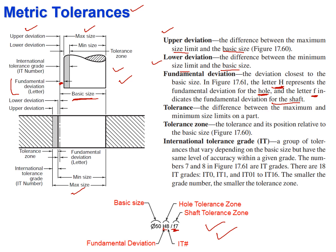The fundamental deviation contains the letter H for the hole and the alphabet F for the shaft, followed by a digit — for example, 8 — which is the IT number, the International Tolerance grade. This IT number gives us the different machining options that can be used for attaining a certain type of tolerance. For example, the number 7 represents an IT number for the machining process used to achieve a certain amount of tolerance.